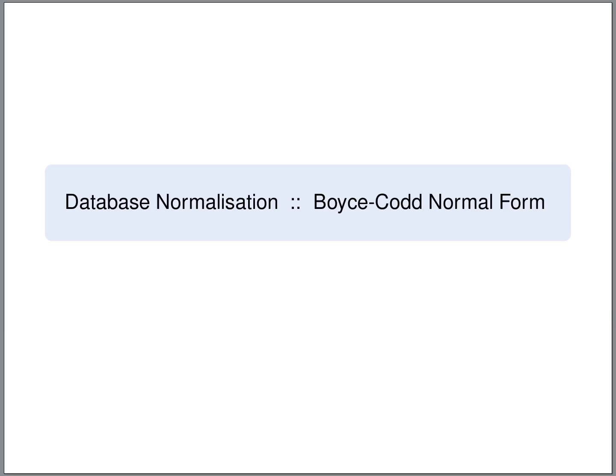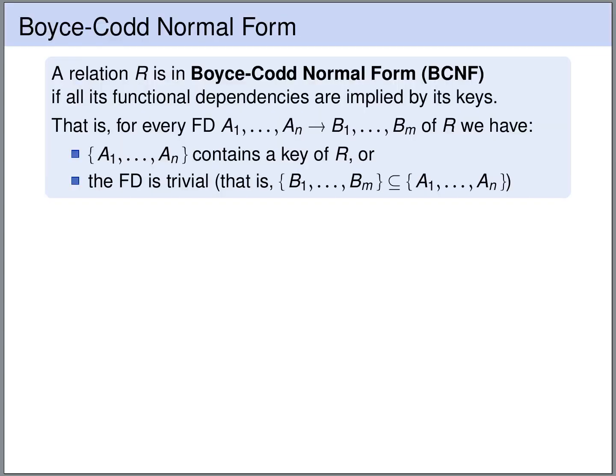As we have mentioned before, there are different normal forms, and these normal forms help us to judge whether a database schema is designed well. If a database schema is in a normal form, then the anomalies that we have seen do not occur. One of the main normal forms is the Boyce-Codd normal form, short BCNF. A relation R is in Boyce-Codd normal form if all of its functional dependencies are implied by its keys.